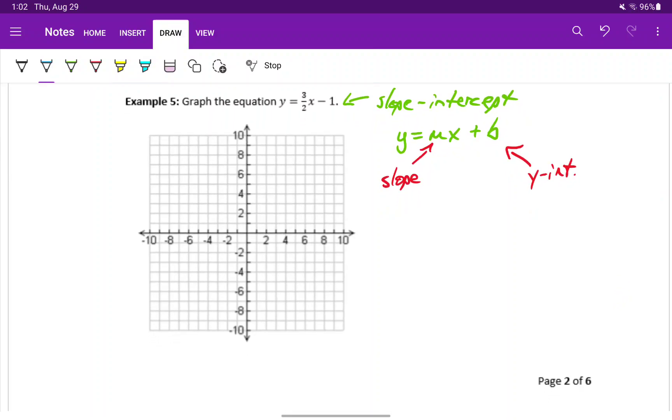That means we can use that y-intercept as a starting point. In example 5, that means our y-intercept would be at negative 1. So we plot the point 0, negative 1.